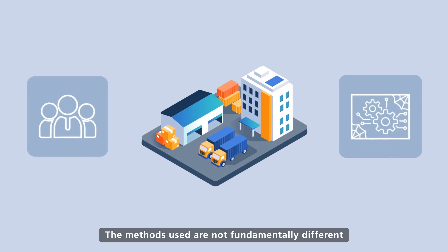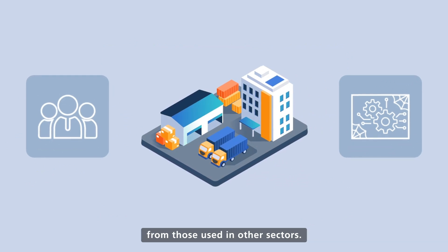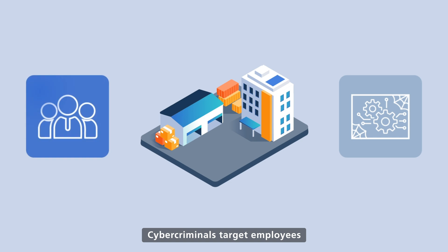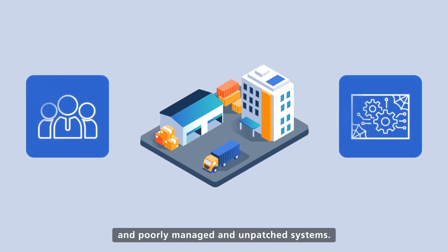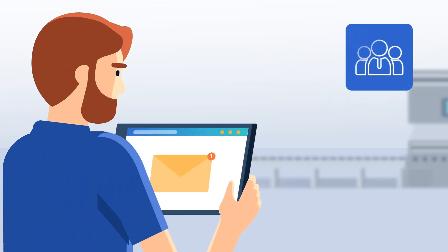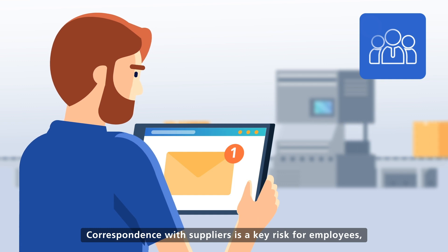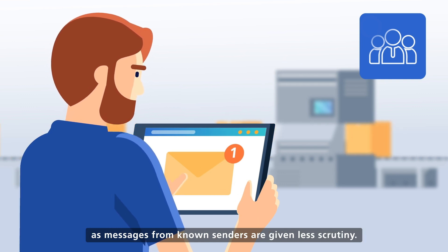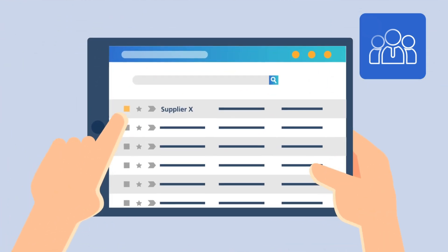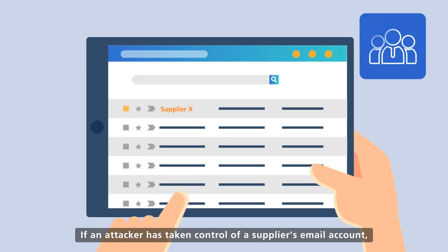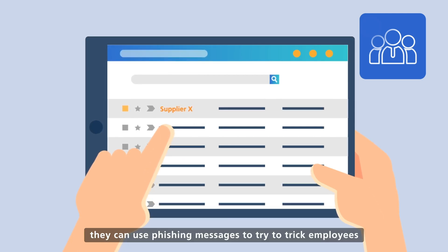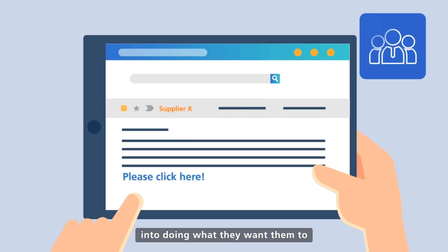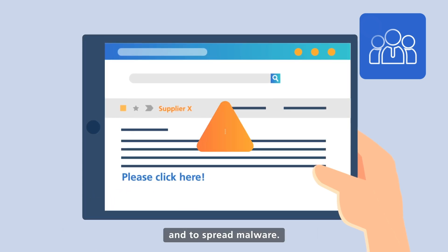The methods used are not fundamentally different from those used in other sectors. Cybercriminals target employees and poorly managed and unpatched systems. Correspondence with suppliers is a key risk for employees, as messages from known senders are given less scrutiny. If an attacker has taken control of a supplier's email account, they can use phishing messages to trick employees into doing what they want, and to spread malware.